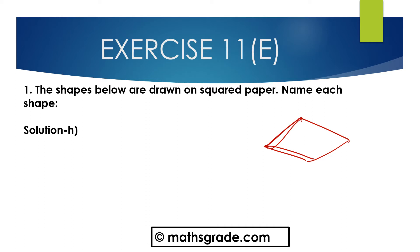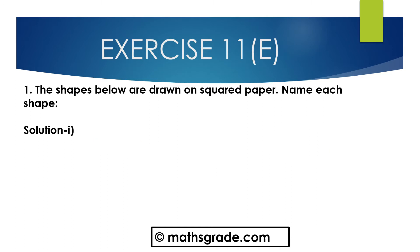In this shape, all four sides are equal but each angle is not equal to 90 degrees. This is the shape of a rhombus. Now question part I: first draw the given shape — this is the shape of a trapezium.